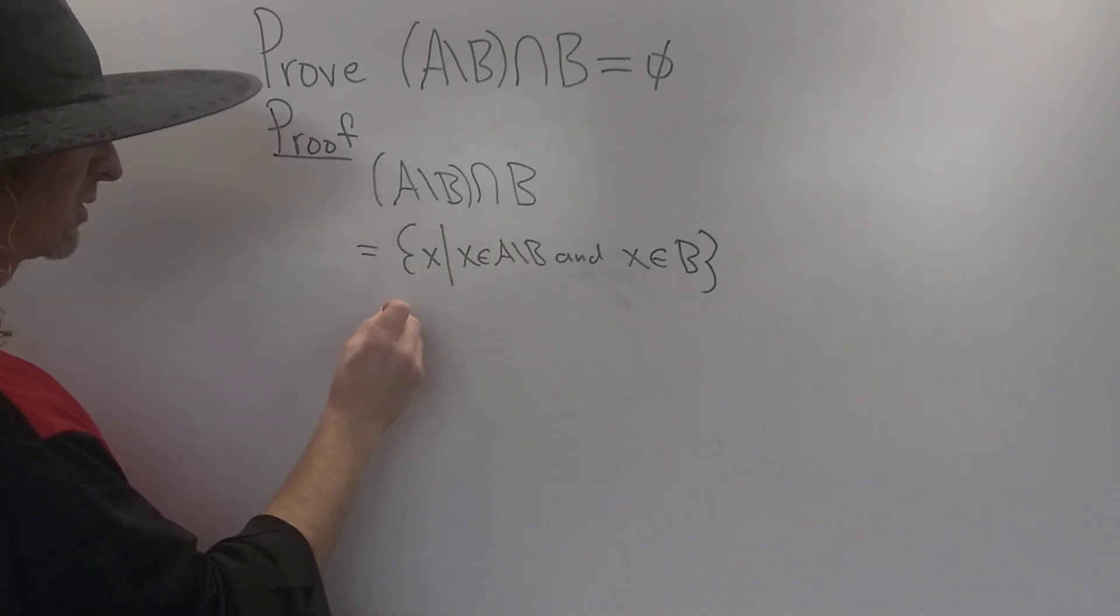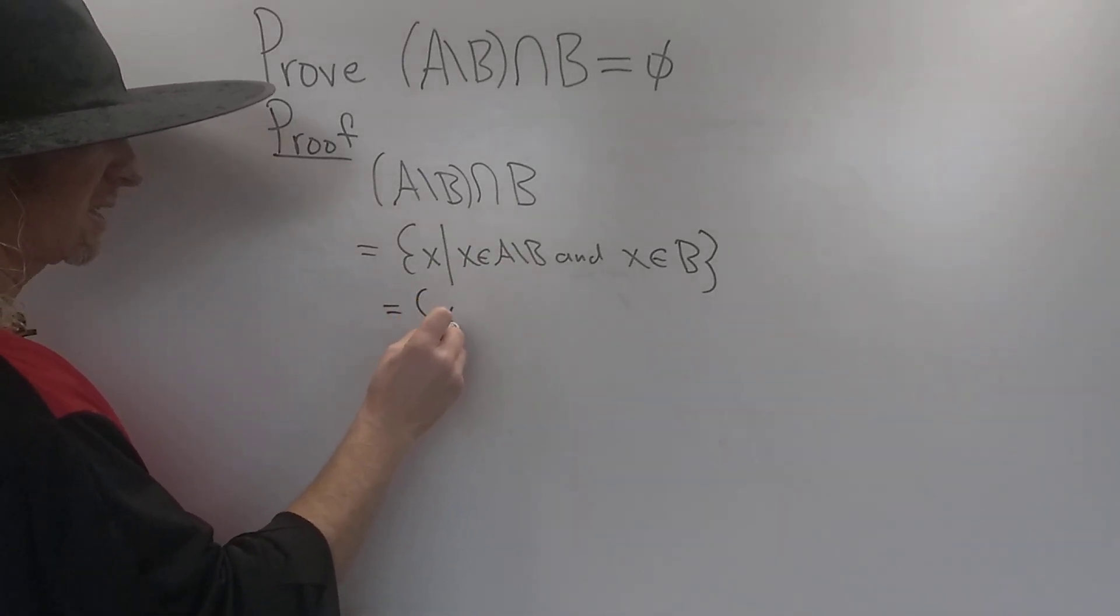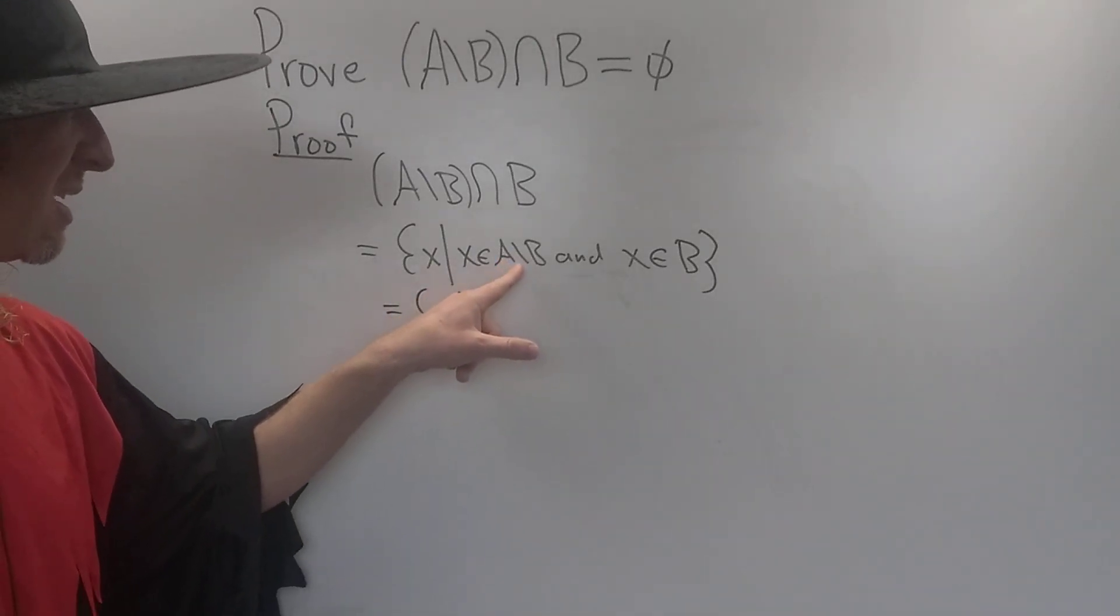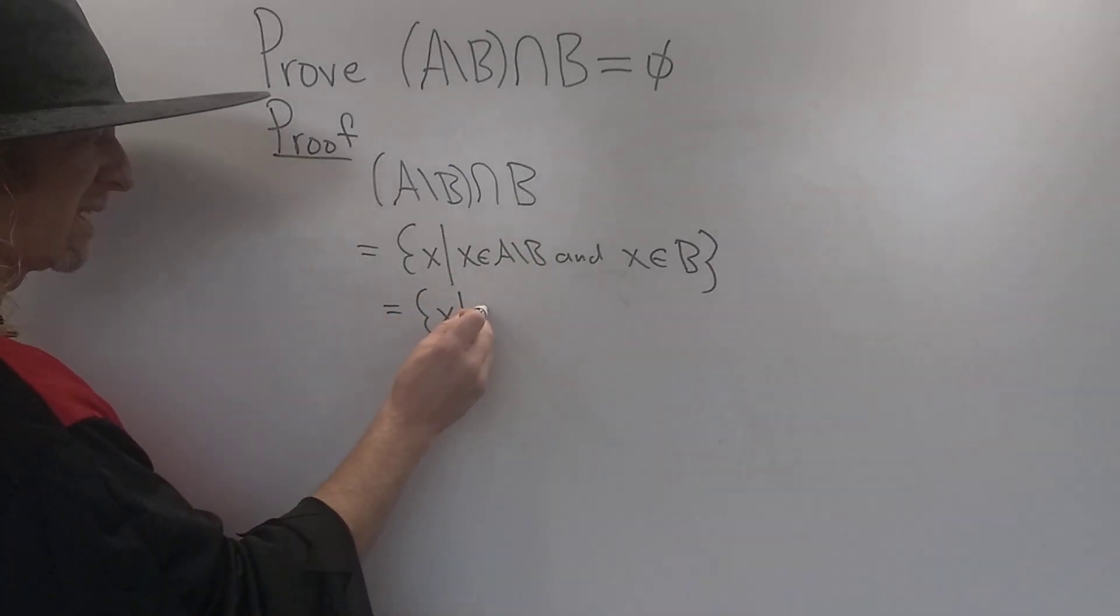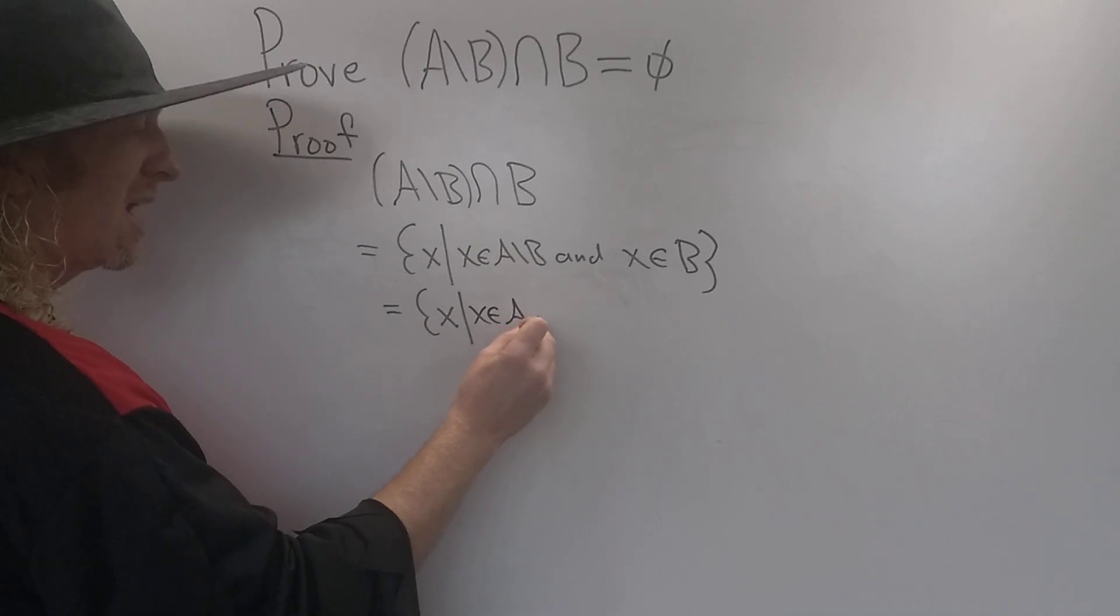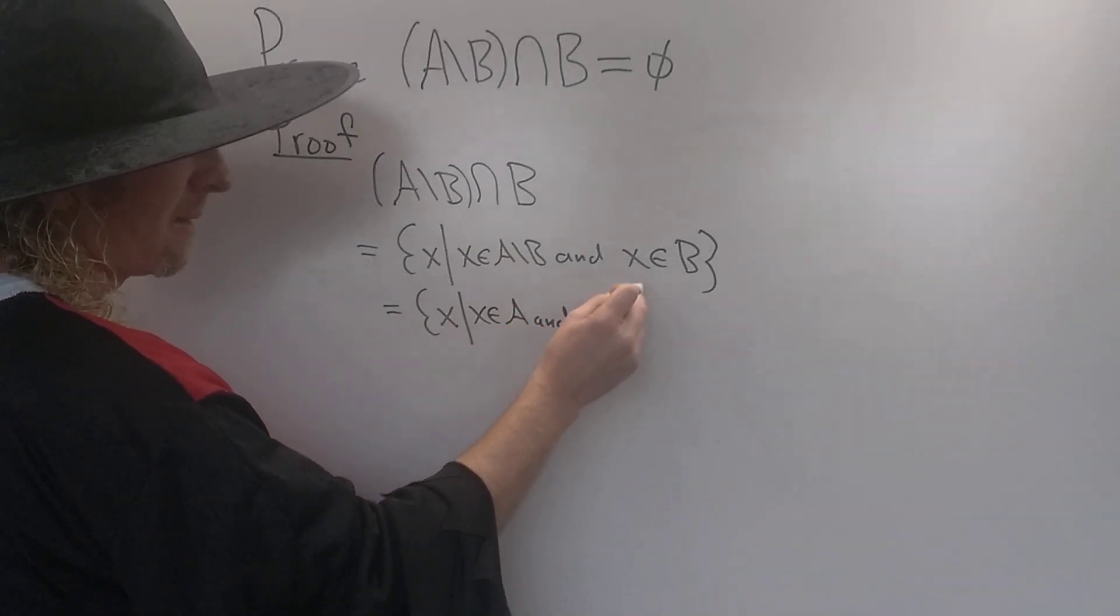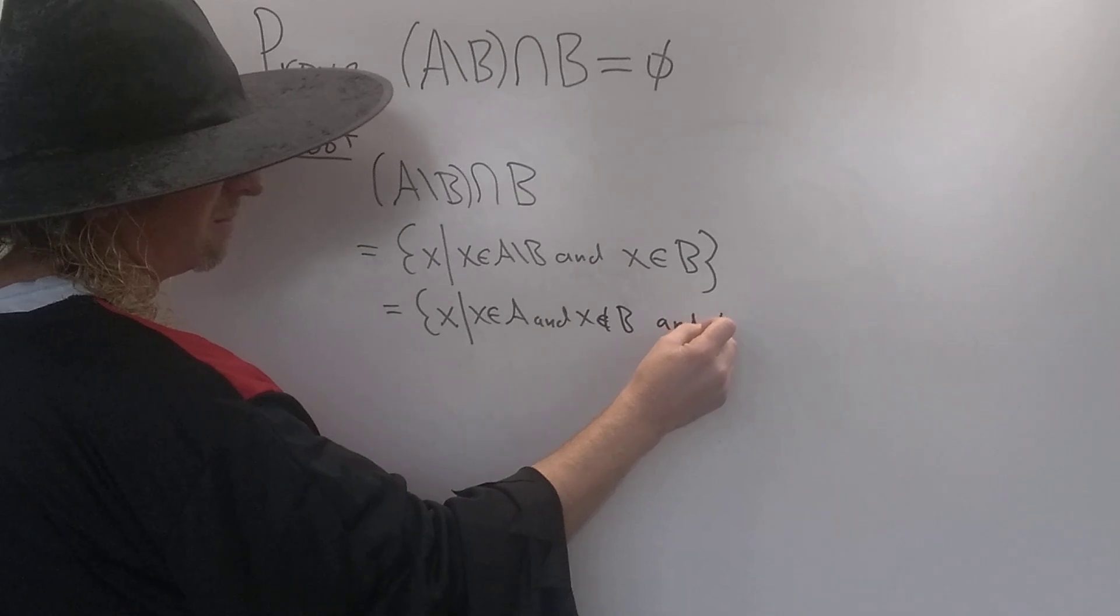Okay, so what does this mean? Let's write that down. This is X such that, if X is in A set minus B, that means X is in A and it's not in B. So this means X is in A and X is not in B. And then we still have this statement here that X is in B.